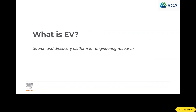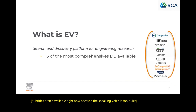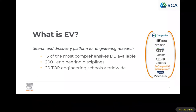EV is a search and discovery platform for engineering research. It's a way for you to find journals and papers. It's not a platform that gives you full access to the journals and papers, because that costs a lot of money and there are many different publishers. But you can have the metadata on journals and papers. We have 13 of the most comprehensive databases available, and we cover more or less 200 engineering disciplines.